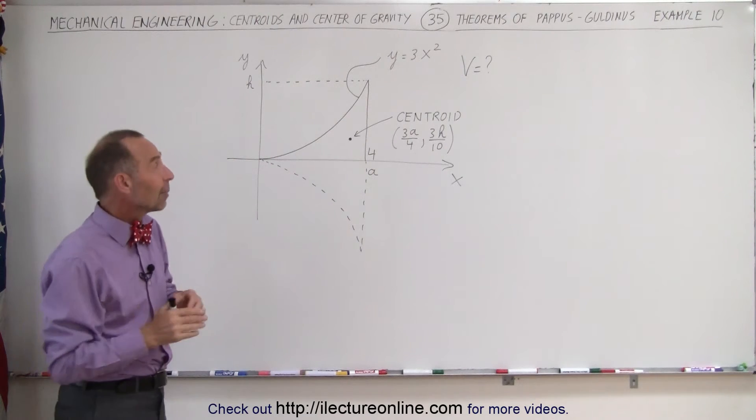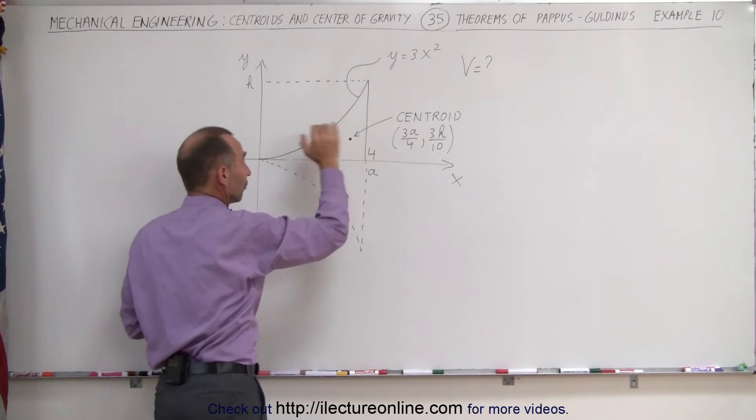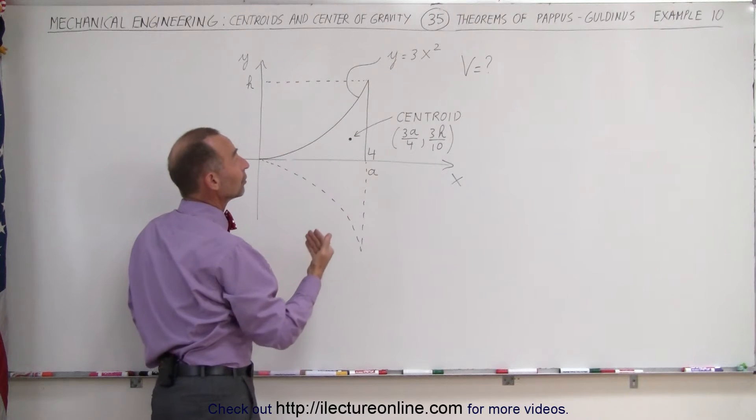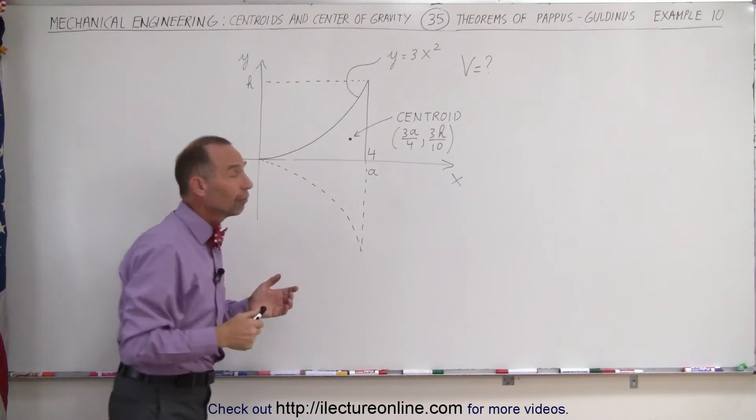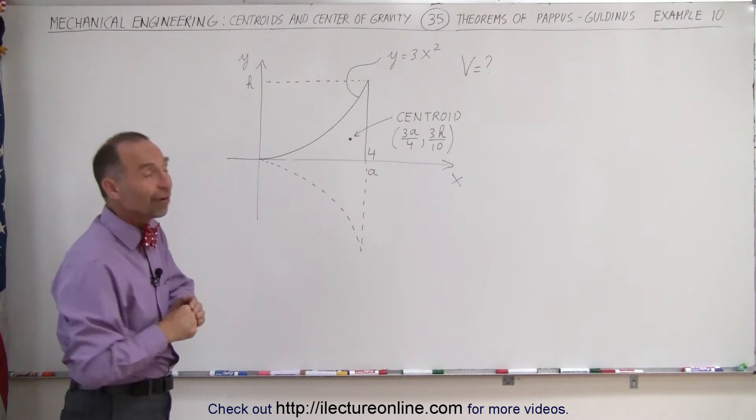So here in this example we're first going to have to find the area of this surface right here, and then we're going to have to find the centroid, and then we're going to have to use the equation from the theorem of Pappus-Guldinus to find the volume.